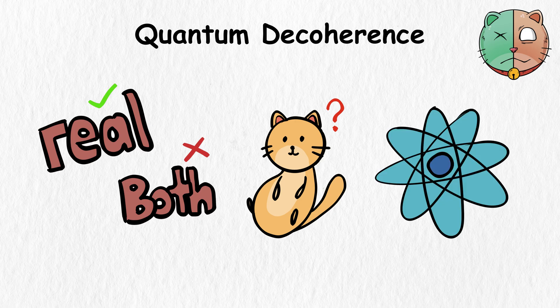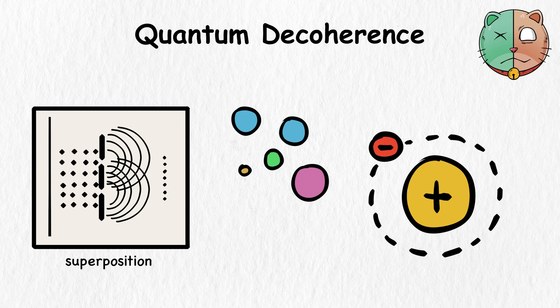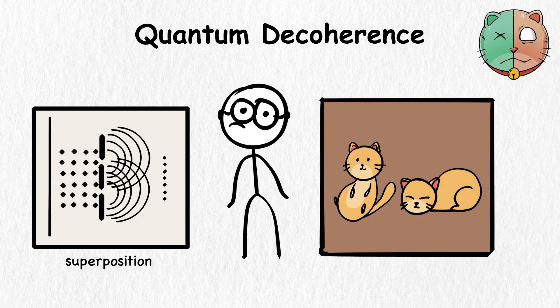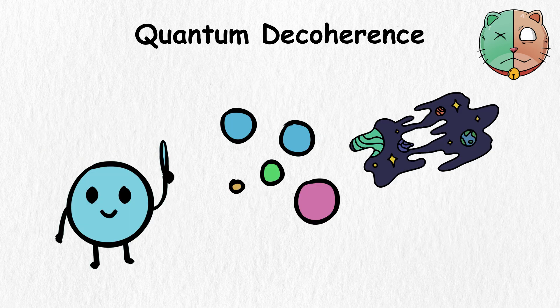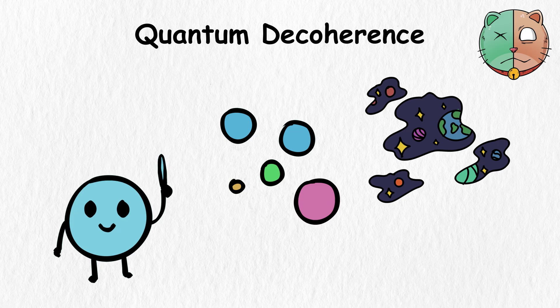When applied to the quantum world, quantum decoherence talks about how particles, like electrons, are no longer in a state of superposition. Instead of being asleep or awake, these particles are forced to decide on a definite state because of how their environment interacts. Once a particle chooses its state, the universe splits into multiple versions, each representing the different states that the particles chose.